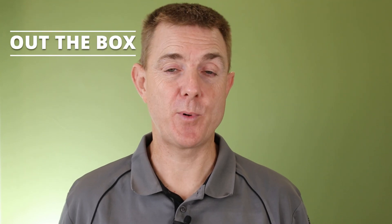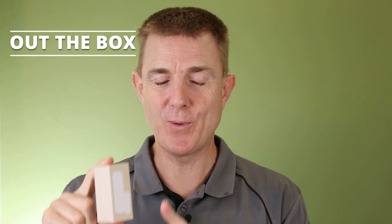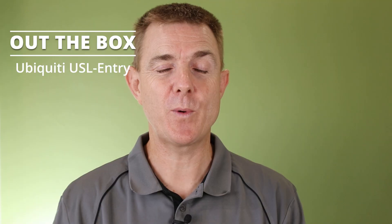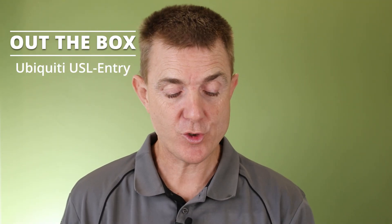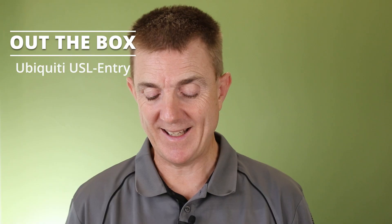Hi and welcome to this edition of Out of the Box. My name is Paul. Today we're going to have a look at what is in this small box. This is part of the Ubiquiti Superlink range of sensors. This is the USL entry, so Ubiquiti Superlink entry.